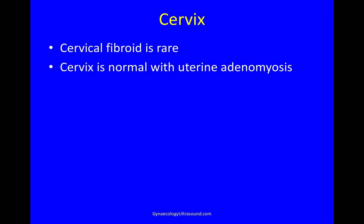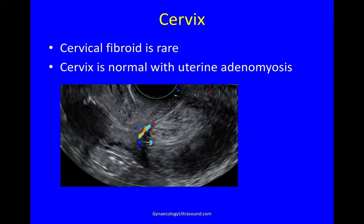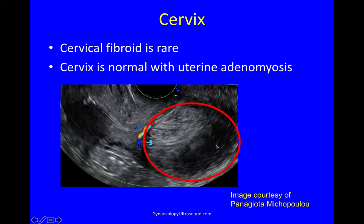Always look at the cervix. A cervical fibroid is rare and the cervix is normal with uterine adenomyosis. This is an example of a cervical fibroid — a transvaginal image of an anteverted uterus showing the anterior wall, fundus, posterior wall, and a mass within the cervical stroma below the internal os. You can clearly see this regular, slightly hyperechoic mass in the stroma of the cervix — not in the canal — with some peripheral vascularity and shadowing. This is a cervical fibroid.